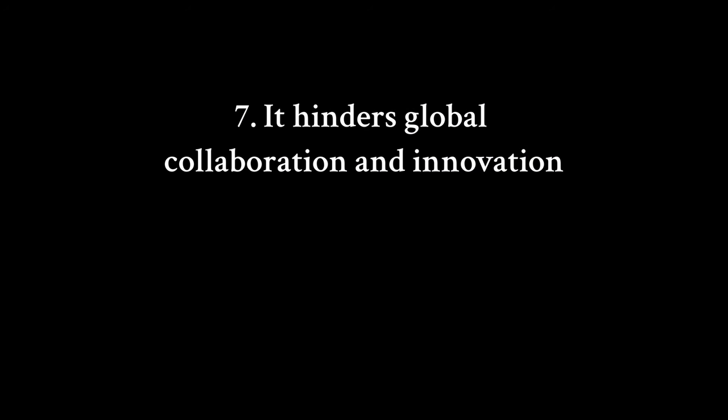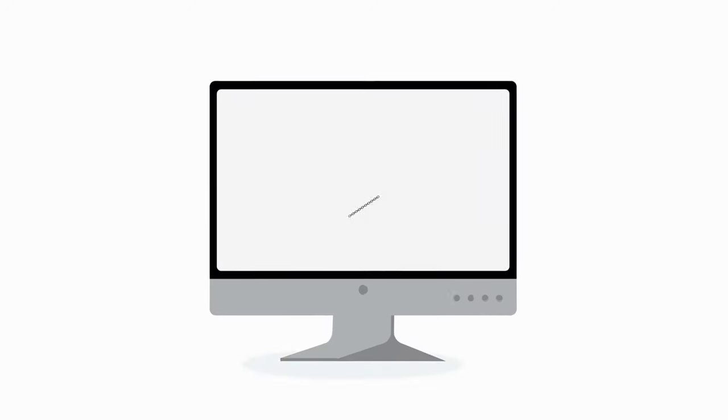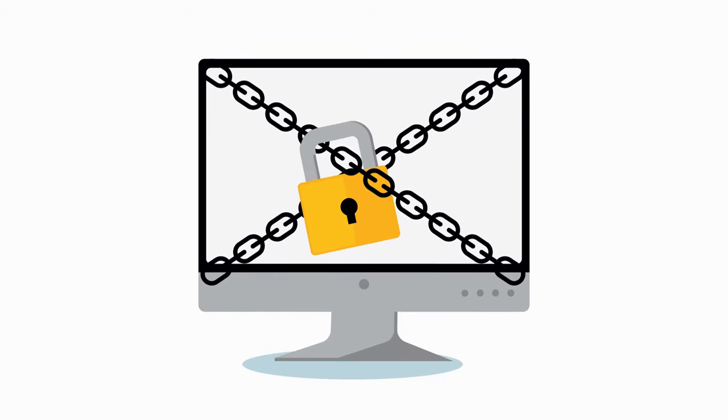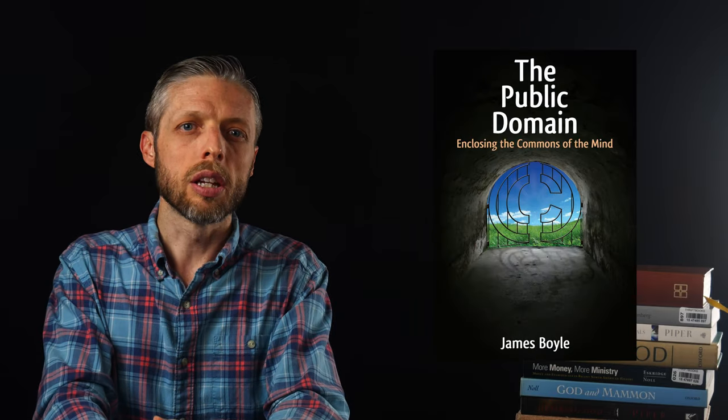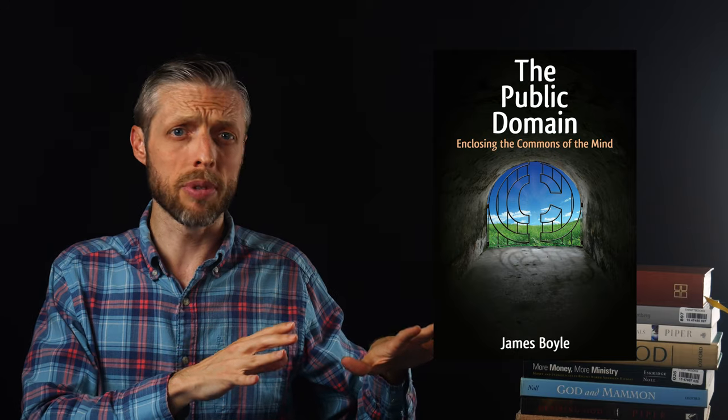Copyright laws are often rigid and inconsistent across international borders, creating barriers to global collaboration. In a world increasingly interconnected by technology, the free flow of information across borders is essential for solving global challenges like disease and poverty and how to get good energy resources to the people who need them. Copyright, however, imposes legal barriers that prevent researchers, educators, and creators from collaborating freely. As noted in The Public Domain, the global nature of knowledge sharing platforms like the internet is undermined by national copyright regimes that impose unnecessary restrictions, slowing down collective problem solving and innovation.